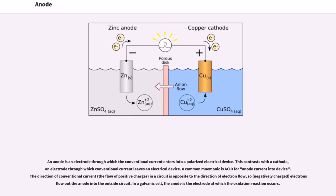An anode is an electrode through which conventional current enters into a polarized electrical device. This contrasts with a cathode, an electrode through which conventional current leaves an electrical device.